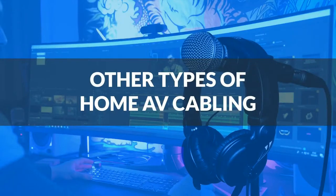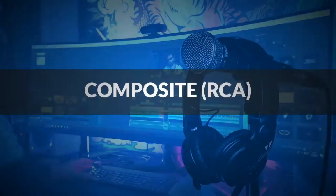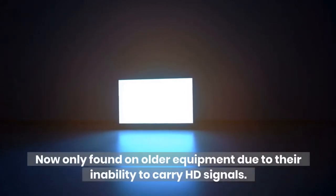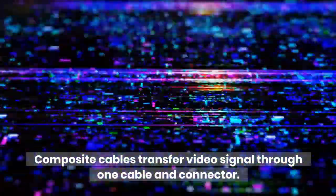Other types of home AV cabling. Composite RCA. Now only found on older equipment due to their inability to carry HD signals. Composite cables transfer video signal through one cable and connector.